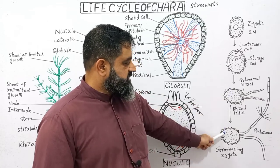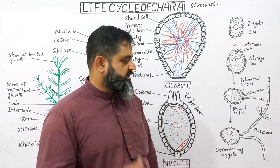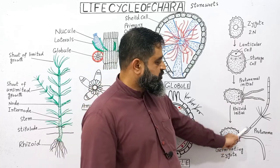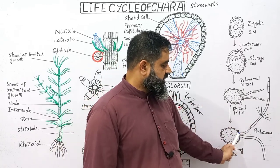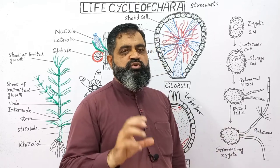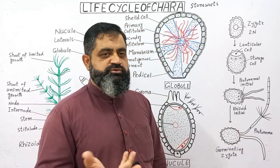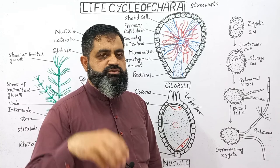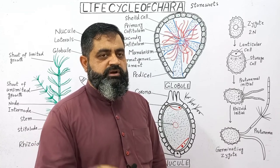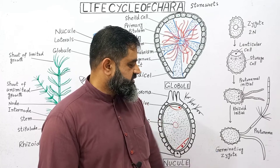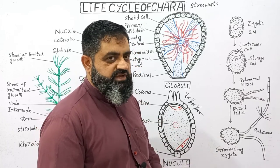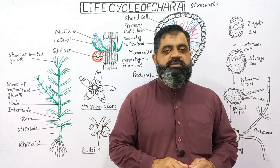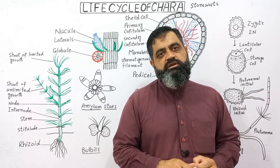As seen in the next diagram, the degenerative cells have degenerated. Only the protonemal initial and rhizoid initial have developed into a shoot-like structure and a root-like structure respectively. The shoot-like structure is known as protonema and there are two types of shoots produced on this plant body. On the lower side you can see the rhizoid, which is the root-like structure that grows into the mud of the water. This is how the germinating zygote completes the life cycle of Chara.